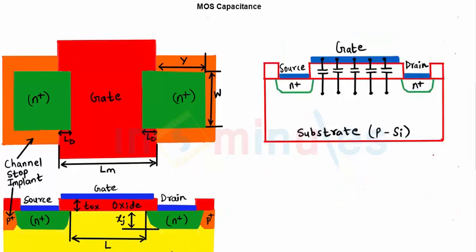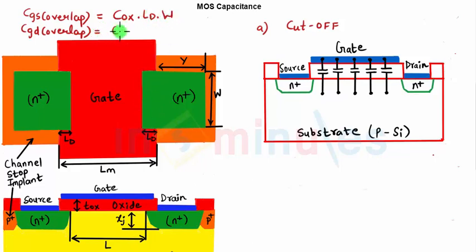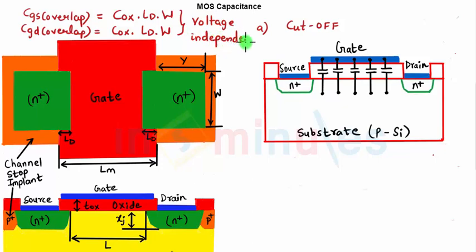Before we enter any region of operation, note that without any external voltage there is already some overlap of the gate with the source and with the drain. The CGS overlap capacitance equals COX times LD times W, and the CGD overlap capacitance also equals COX times LD times W. These are voltage-independent capacitances, where COX is the permittivity of the oxide divided by the oxide thickness.